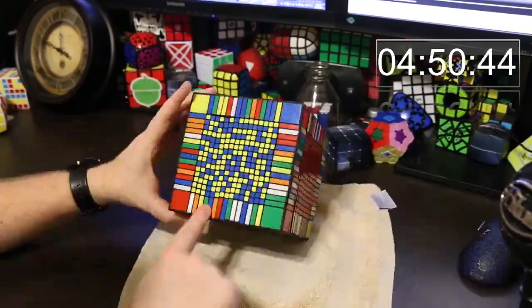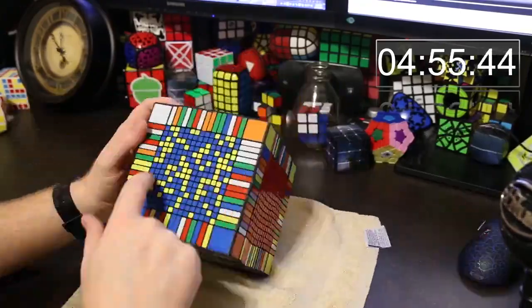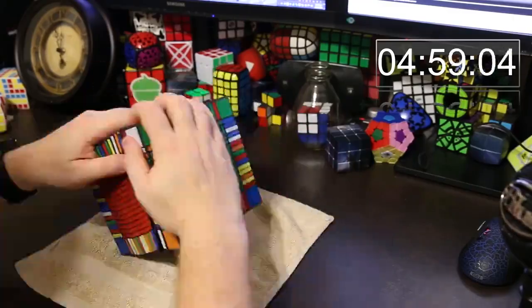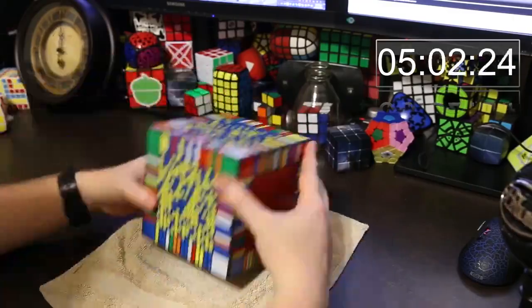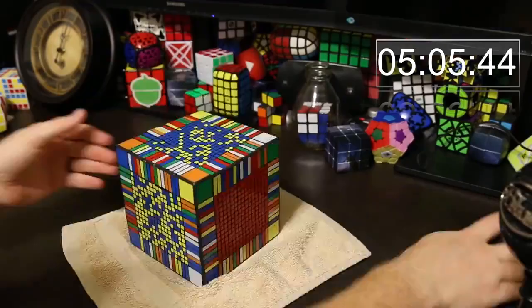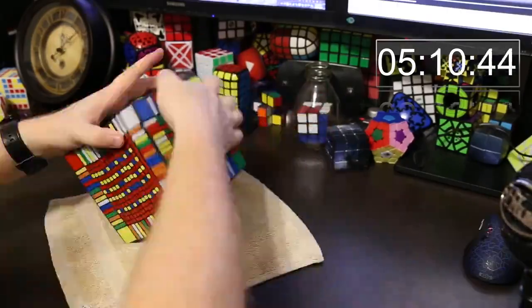And so I don't know if I'm solving the last two centers very efficiently, but basically I'm just using commutators to put the pieces where they belong, and so it's very inefficient, and so it just took a very long time to do those last two centers, which I'm doing right here.